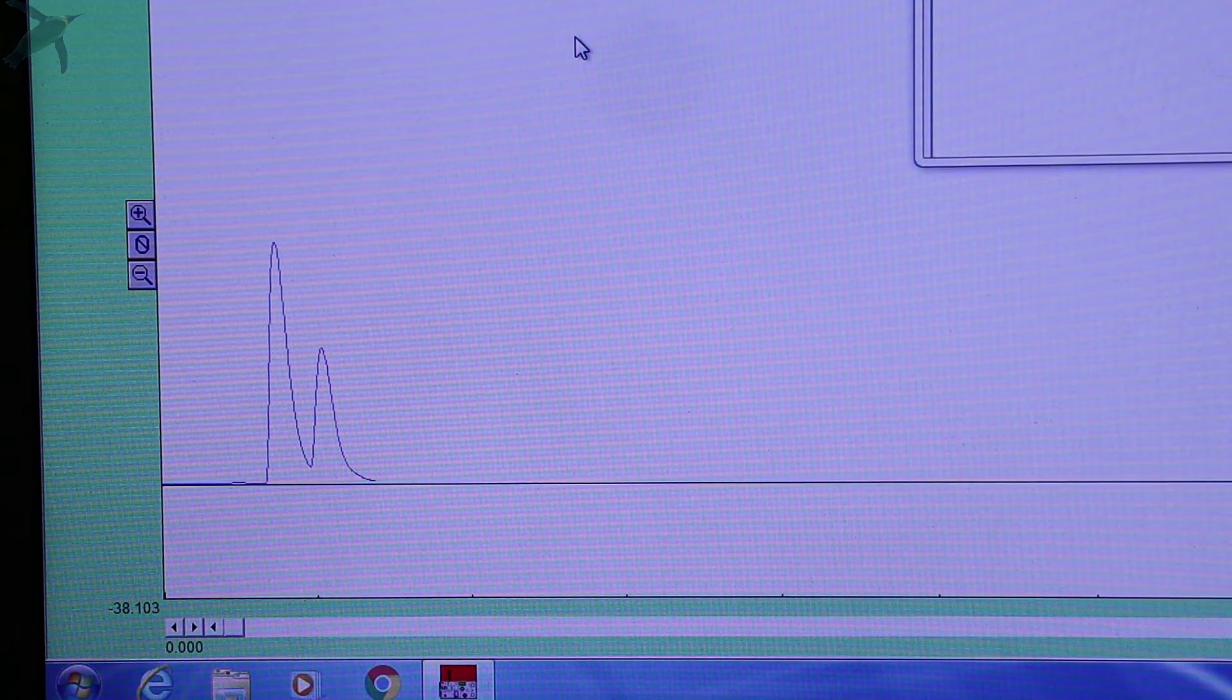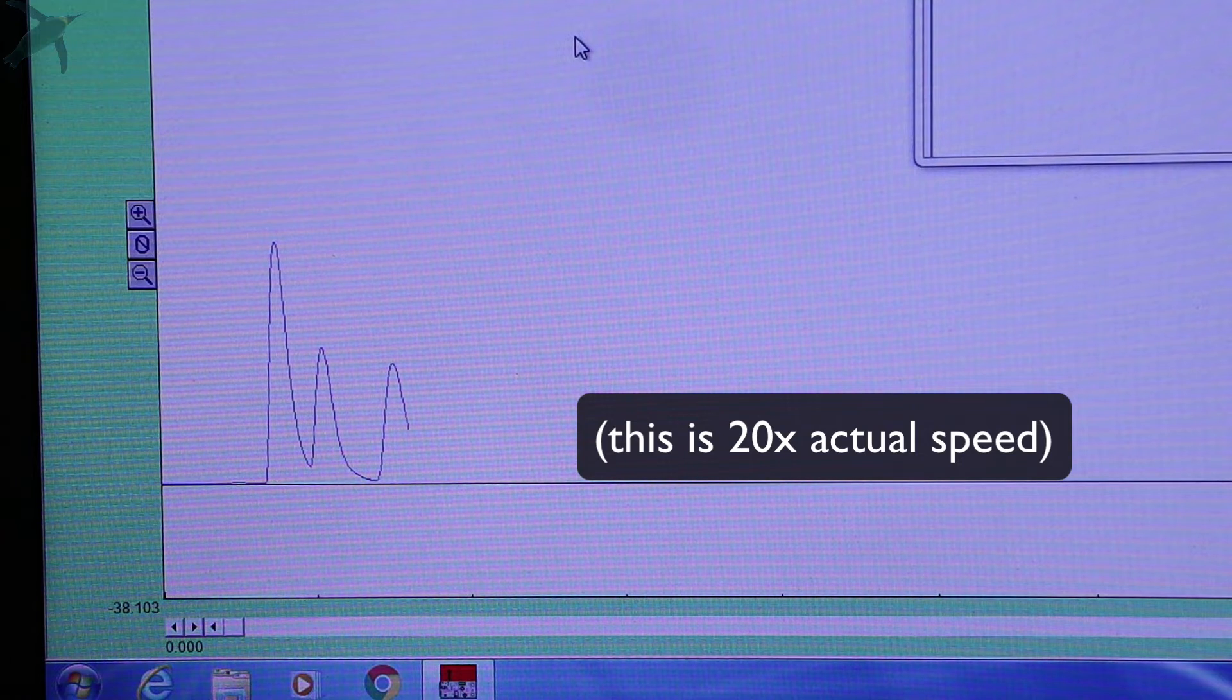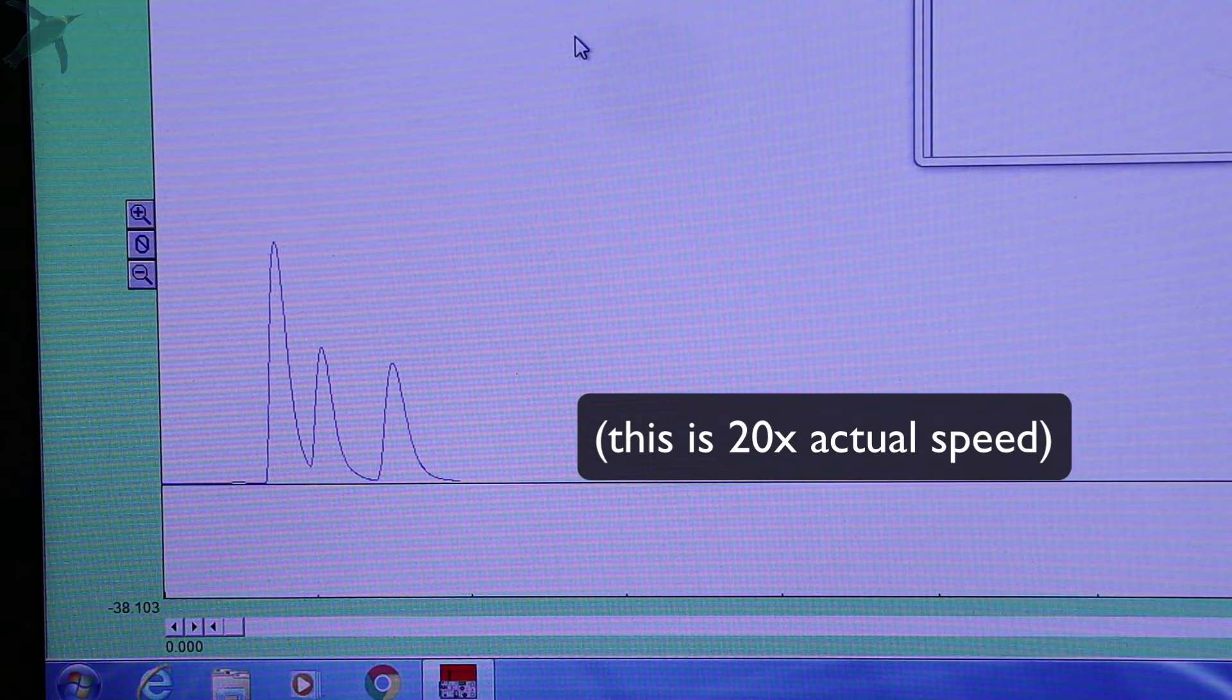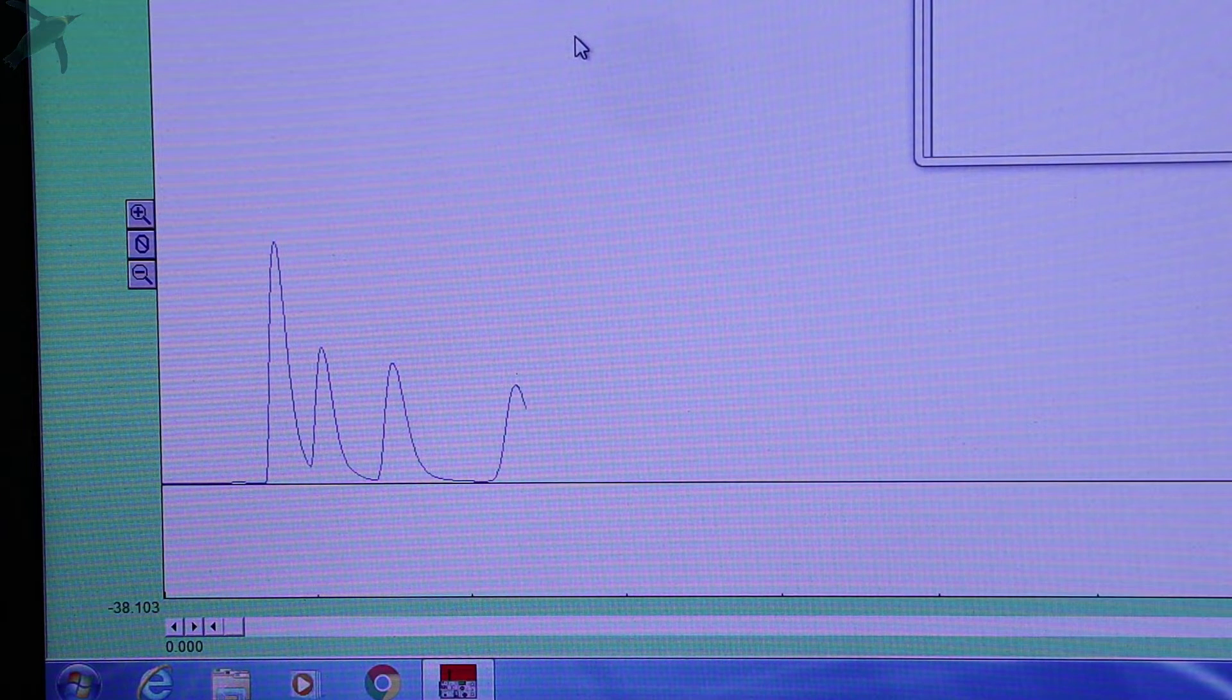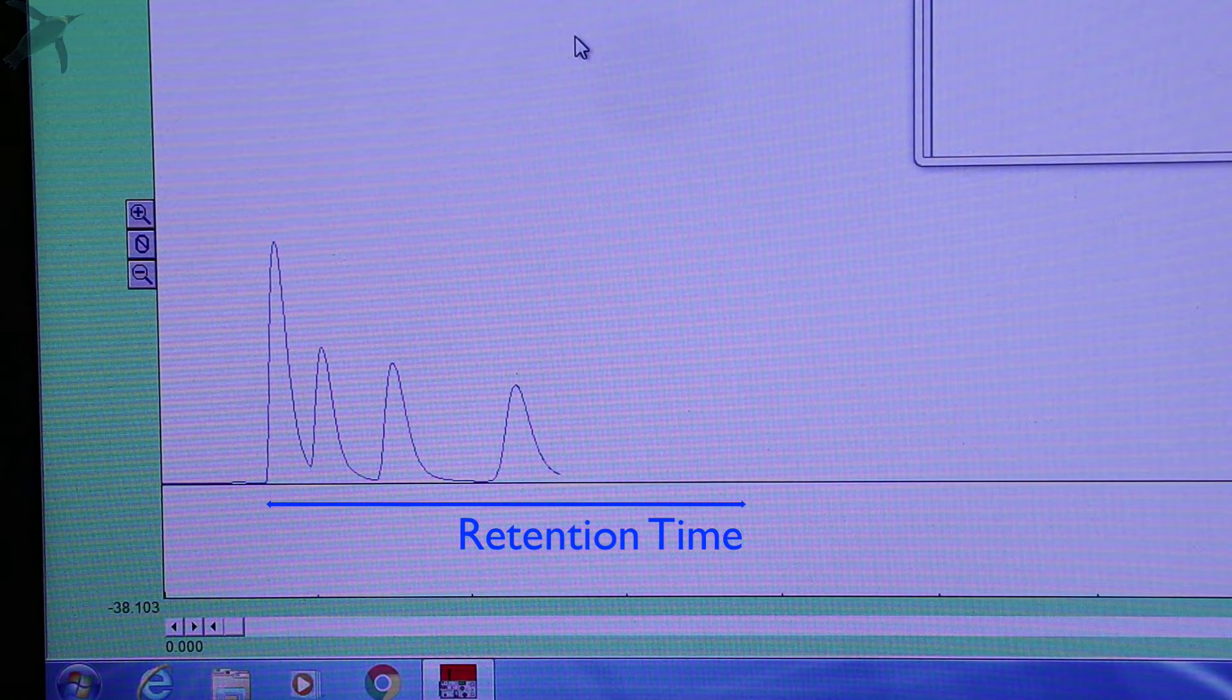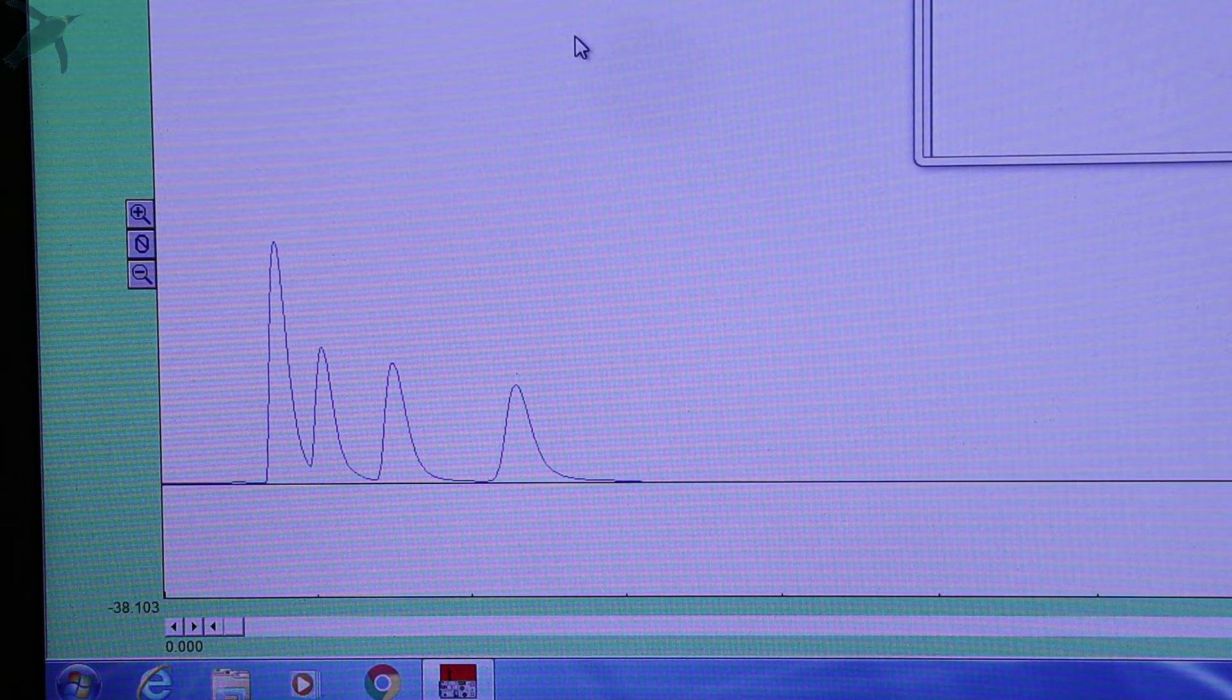This is what the GC computer interface looks like. It's a gas chromatogram, so you have intensity on the y-axis and retention time on the x-axis.